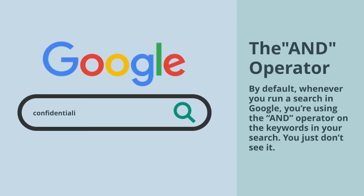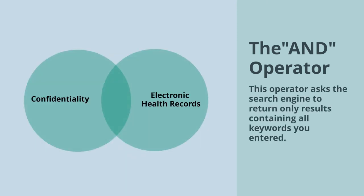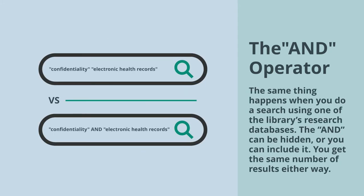By default, whenever you run a search in Google, you're using the AND operator on the keywords in your search — you just don't see it. This operator asks the search engine to return only results containing all keywords you entered. In the image, that's where the two circles overlap. The same thing happens when you search using one of the library's research databases. The AND can be hidden or you can include it; you get the same number of results either way.